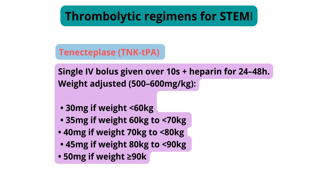Thrombolytic regimens for STEMI. Tenecteplase: single IV bolus given over 10 seconds plus heparin for 24–48 hours. Weight-adjusted dosing: 30 mg if weight less than 60 kg; 35 mg if 60–70 kg; 40 mg if 70–80 kg; 45 mg if 80–90 kg; 50 mg if more than 90 kg.